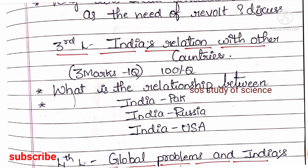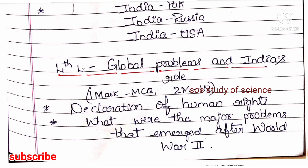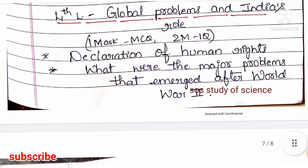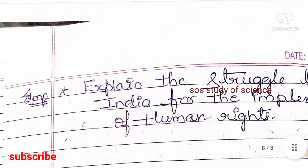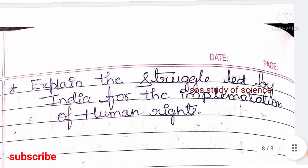The fourth lesson of Political Science is Global Problems and India's Role. Here you can expect 1 MCQ and 1 two-mark question. Focus on the Declaration of Human Rights, the major problems that emerged after World War 2, and India's struggle for the implementation of human rights.